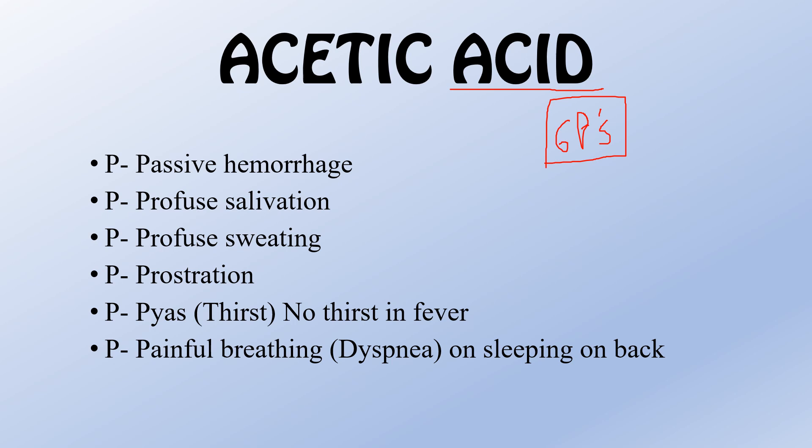The first P represents passive hemorrhage. Acetic Acid is known for hemorrhage from more than all of the mucous outlets — we see hemorrhage, and passive hemorrhage can be observed.